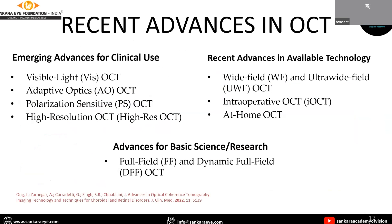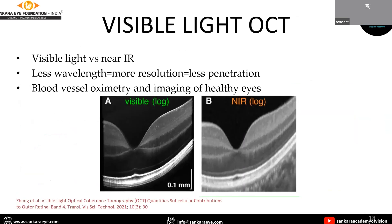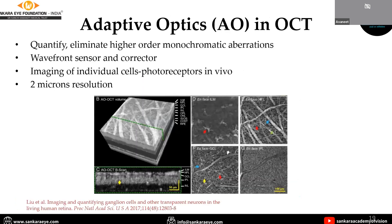Coming to recent advances in OCT, with changes in optics we can have different benefits. Visible light can be used instead of near infrared light — because of the shorter wavelength, resolution will improve. We can see the difference between images using visible light versus near infrared light. Adaptive optics in OCT can quantify and eliminate higher order monochromatic aberrations using wavefront sensors and correctors, achieving a resolution up to two microns.